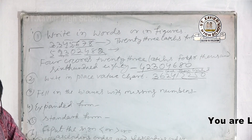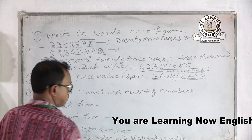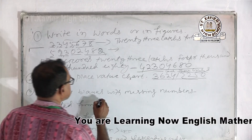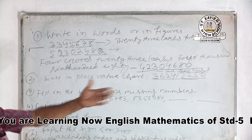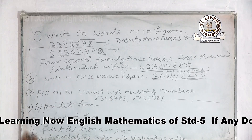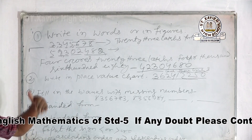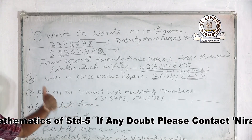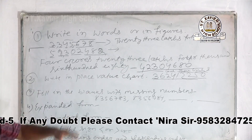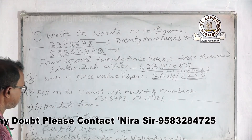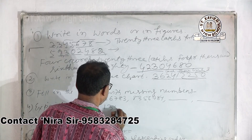Now fill in the blanks with missing numbers. In your book, Chapter 1.2, you have to find and add the missing numbers following the pattern — it is very easy. You may also raise numbers by one, two, or three and write them. Then we look at expanded form. Suppose the number is 1, 3, 5, 2, 9, 8, 6.